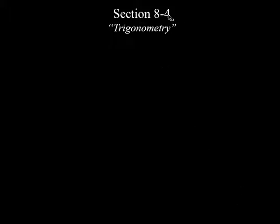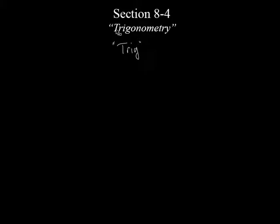All right, here we go. We're going to do section 8.4, which is trigonometry — or we just sometimes say trig, just to make it a little bit shorter. So what we're going to do is trigonometry just deals with the angles. We're trying to find angles in a triangle. See the 'tri' right there? And the 'gon' is talking about angles in a triangle — the study of angles in a triangle is basically what that word means.